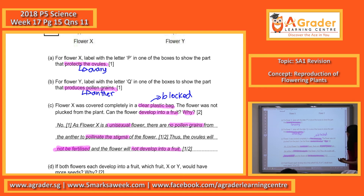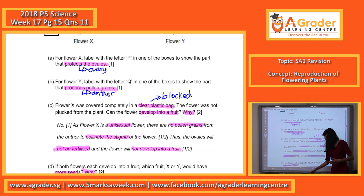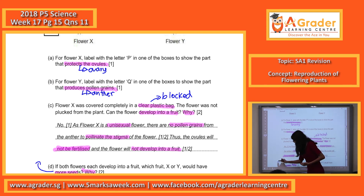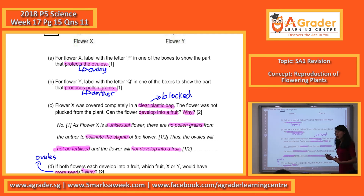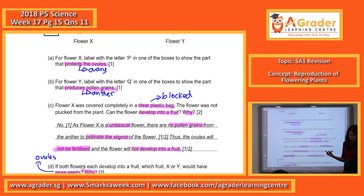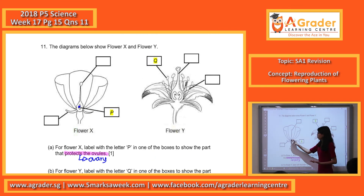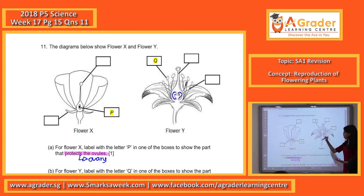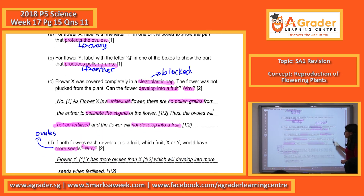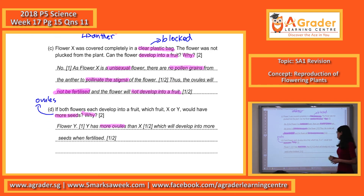Okay, now let's look at question D. So if both flowers develop into fruit, which fruit would have more seeds — and why? Take note — I'll give you a clue: the one that has more seeds, you just have to look at the number of ovules. Which one do you think would have more ovules? Flower Y. Why? If you look at X, there's only one ovule, but if you look at Y, there are actually two ovules. So Y will have more seeds than flower X because it has more ovules. Ovules will develop into seeds. Please mention that flower Y, because it has more ovules, will develop into more seeds when fertilized.